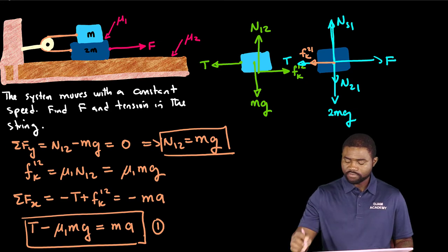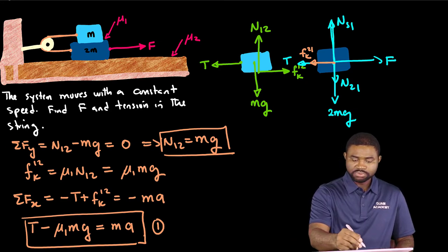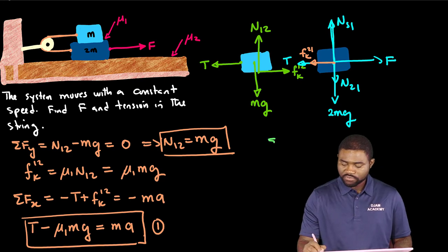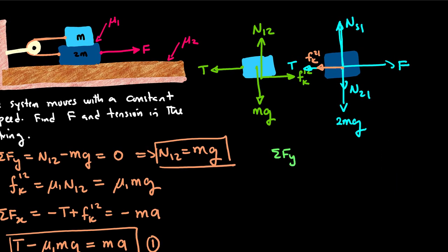Now if we do the same thing for block two, we know that the summation of Fy will be equal to Ns1 minus N21 minus 2mg equal to zero.